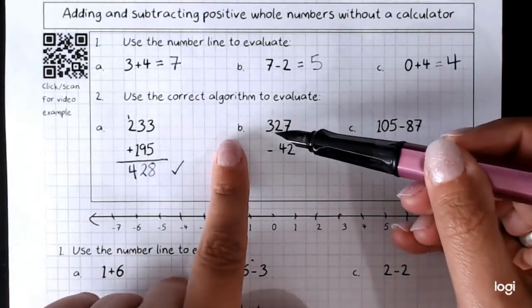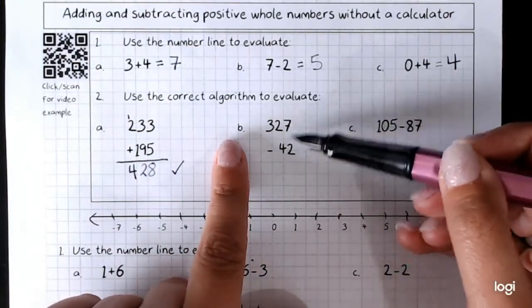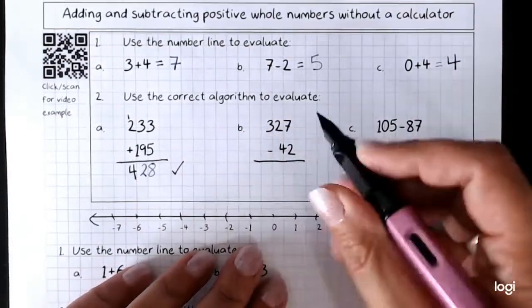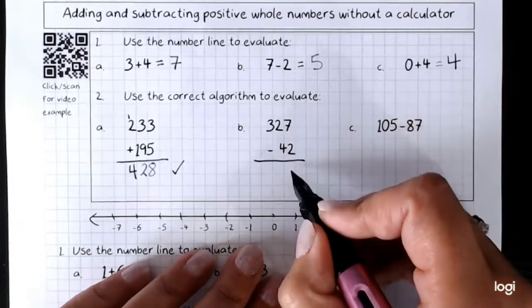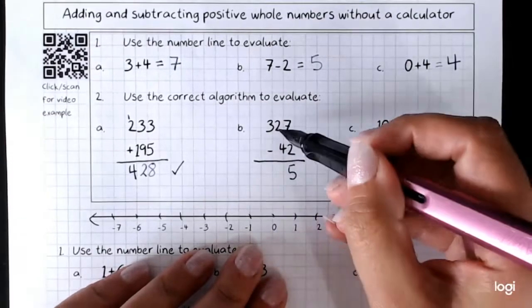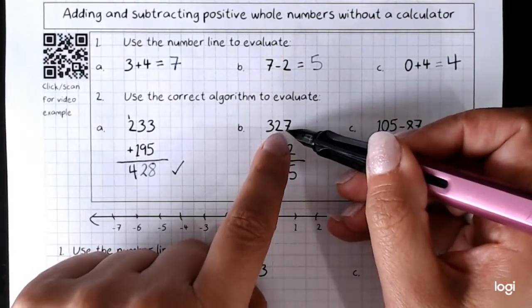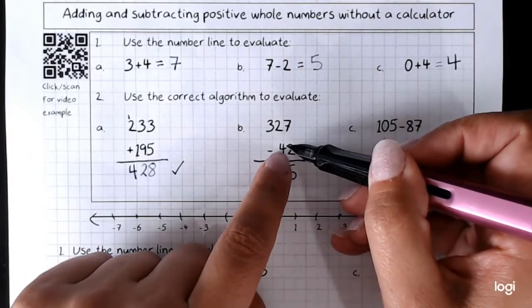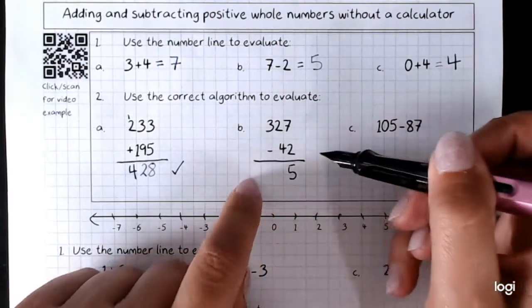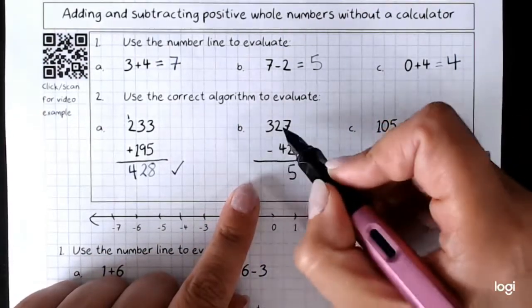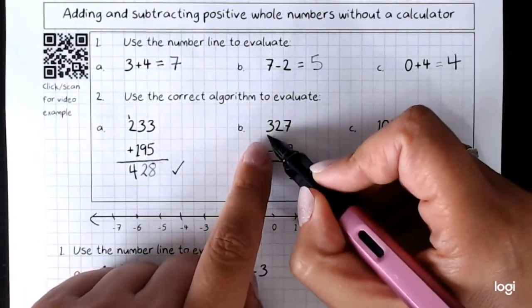This one here, 327 take away 42. Start with the units. Don't forget your line underneath. 7 take away 2 is 5. Now 2 take away 4. That's a problem. Our number that we're starting with is smaller than the number that we're taking away. You'll remember from previous years that when we have that problem, we need to borrow from the next digit up.